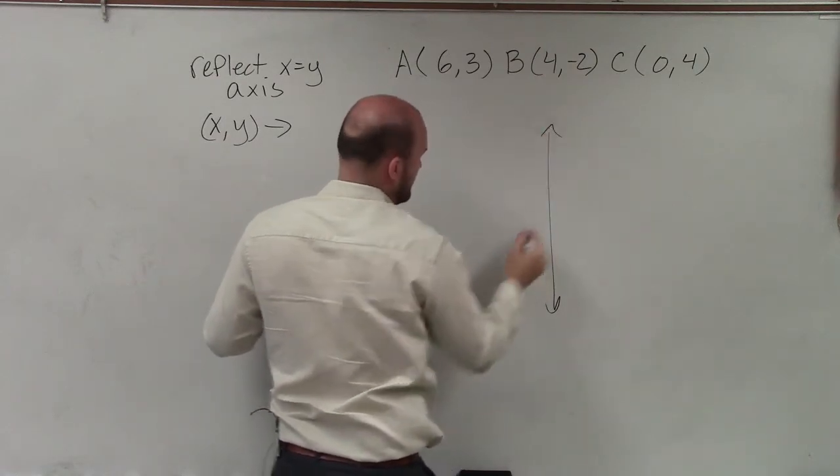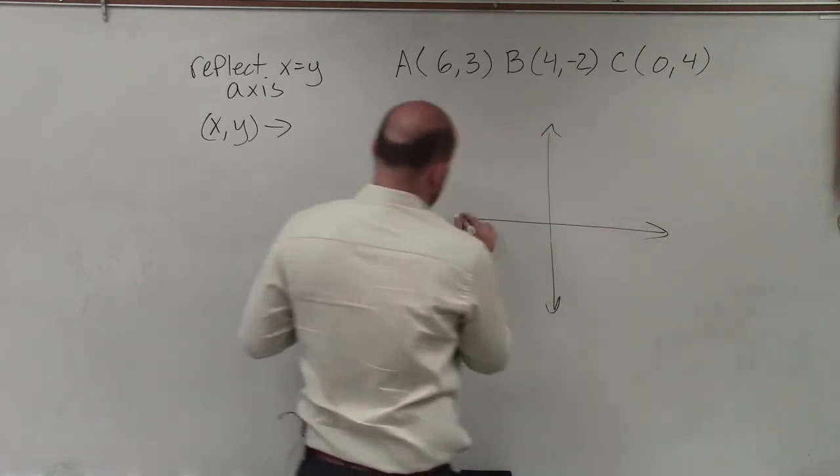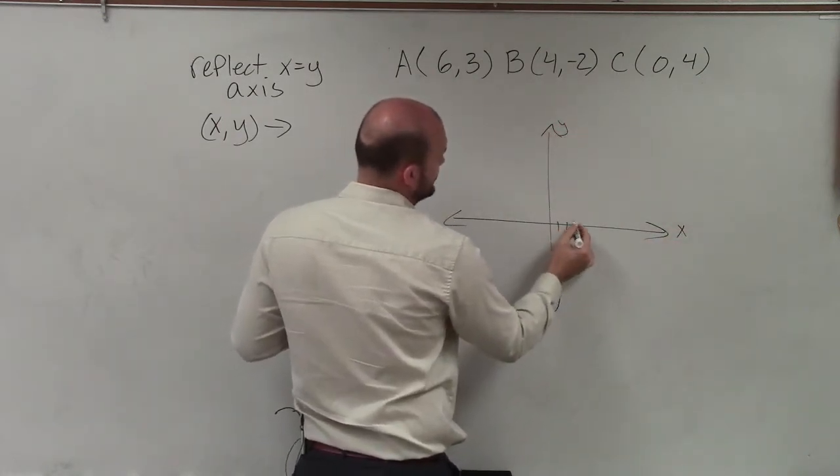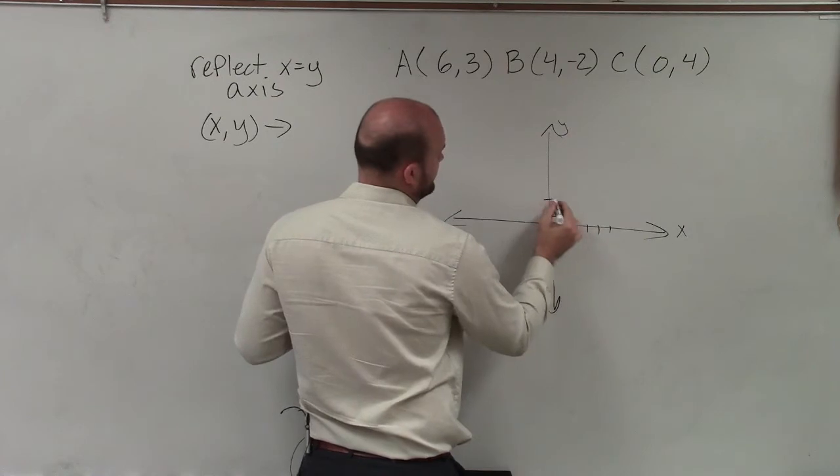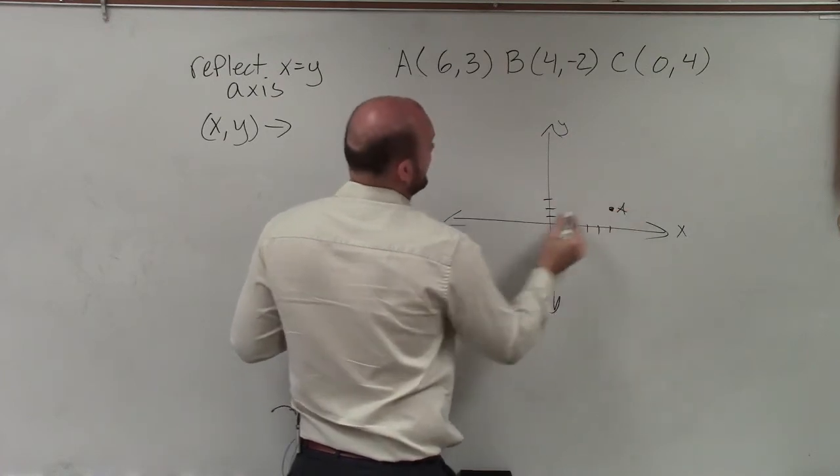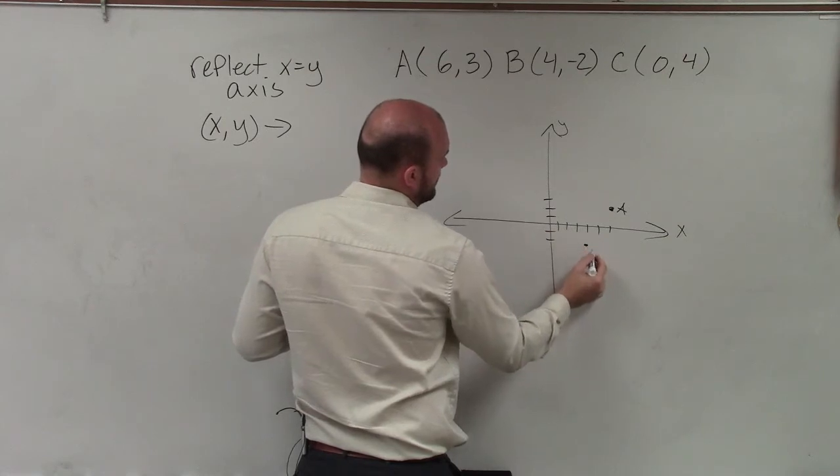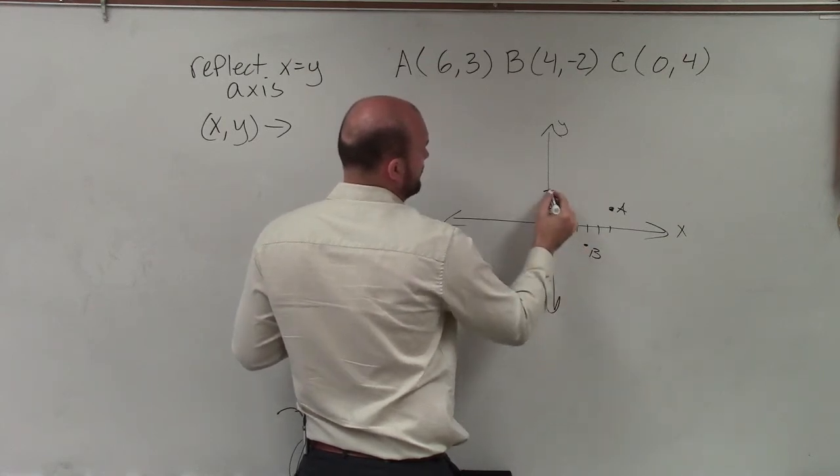And actually I'll come down a little bit here. Okay, so plotting these points, we know here's our y-axis and here's our x-axis. So A would be at 6, 3. B is at 4, negative 2. And C is at 0, 4.